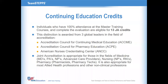Individuals who have attended and signed in both days and have completed the online evaluation form will be eligible for 13 JA continuing education credits. Joint accreditation is appropriate for those in the field of medicine, nursing, and pharmacy, and it is also appropriate for most allied health professionals and other non-clinical professions.